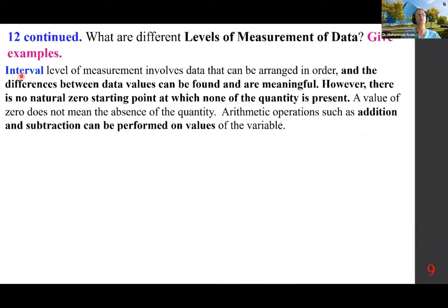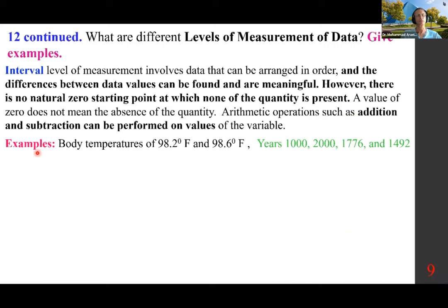Interval level of measurement involves data that can be arranged in order and the differences between data values can be found and are meaningful. However, there is no natural zero starting point — a value of zero does not mean the absence of the quantity. Arithmetic operations such as addition and subtraction can be performed. Examples: body temperatures of 98.2°F and 98.6°F; years 1000, 2000, 1776, and 1492.